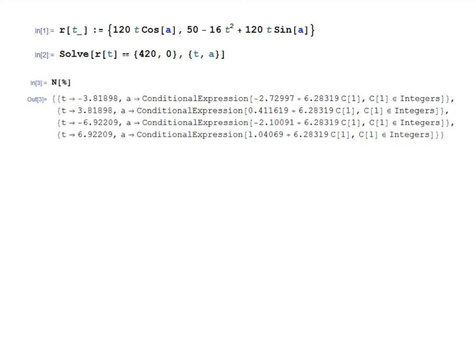So the command I want to use is solve. I'm going to solve the equation r of t equals the vector 420 comma 0, and I want to solve it for the two variables t and a. Now when I type that in, I'm going to get a massive output. Mathematica is going to be giving me the exact answer, which involves lots of arc tangents and square roots and all sorts of complicated things.